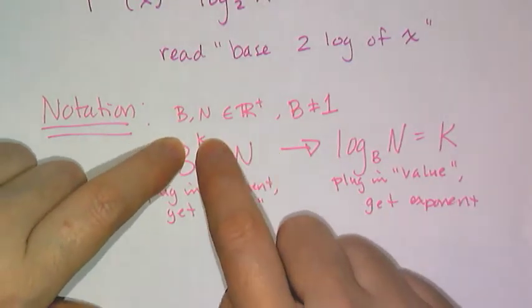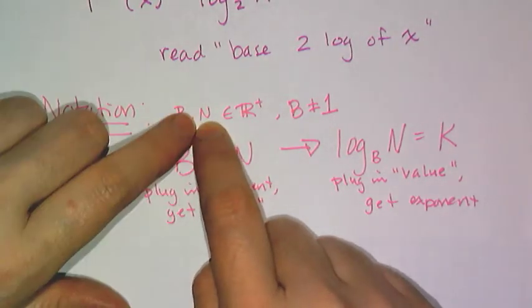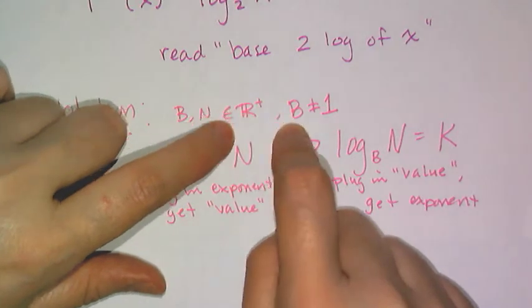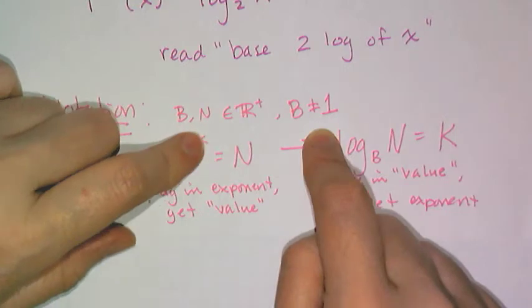Now here's a note on notation. I have a big B for base, a big N for some number. They're elements of positive real numbers and the base cannot equal 1 because you can't have an exponential function with a base of 1.